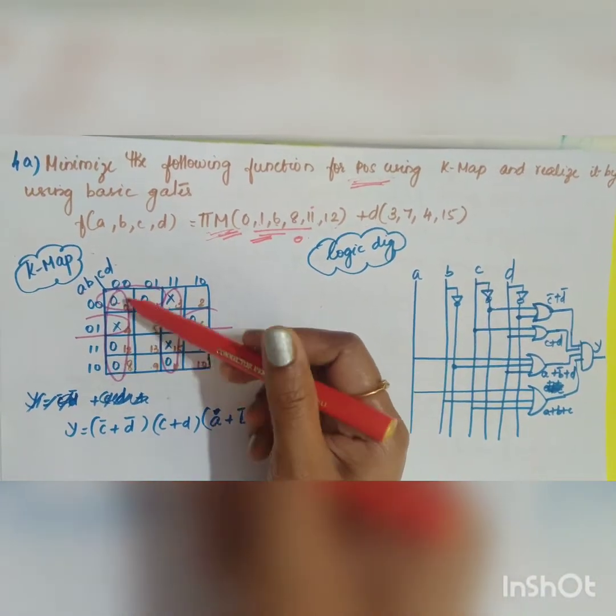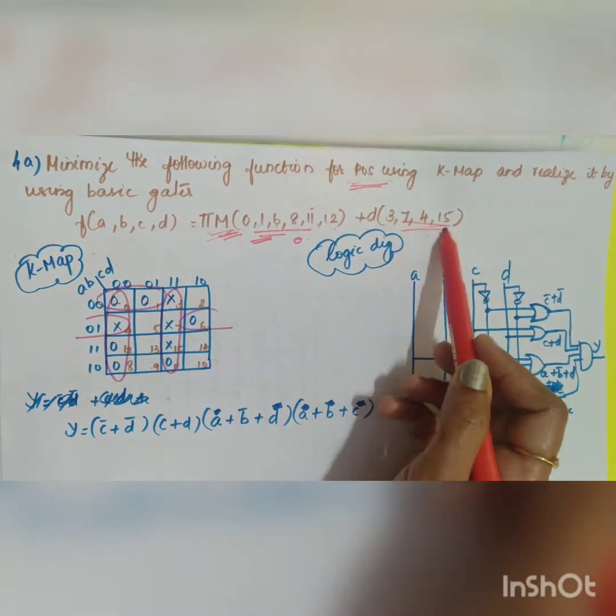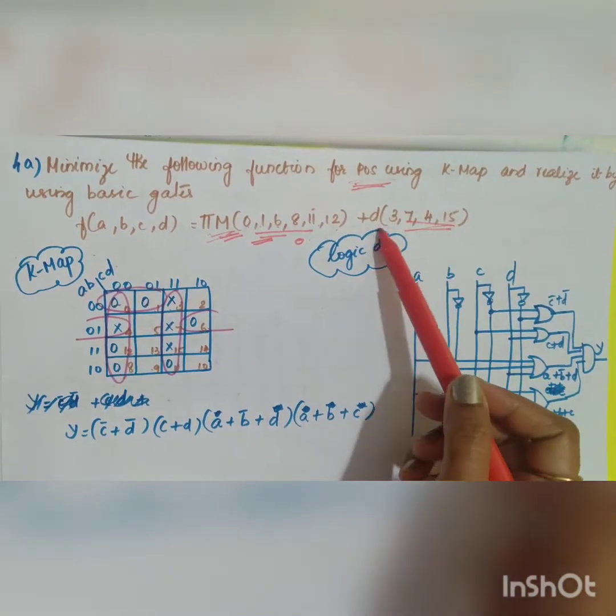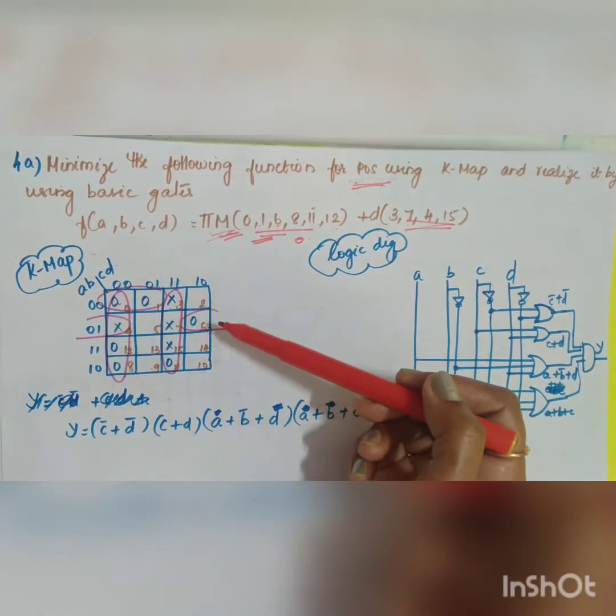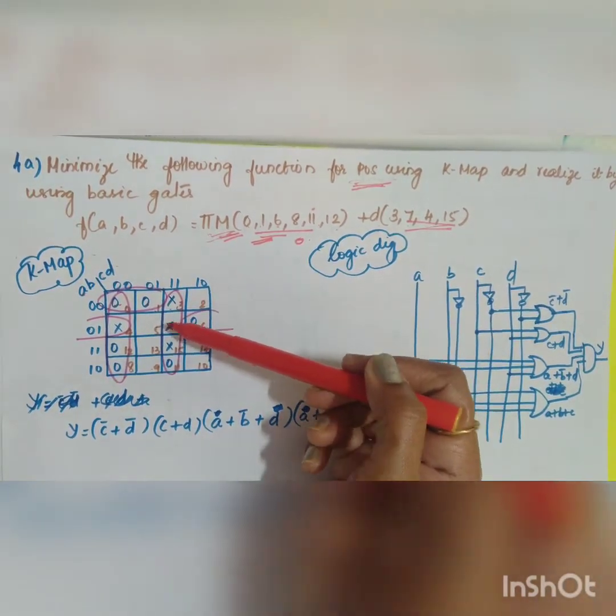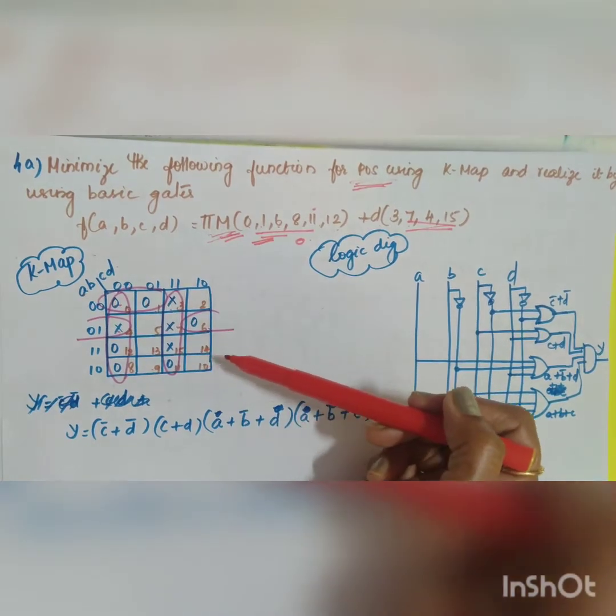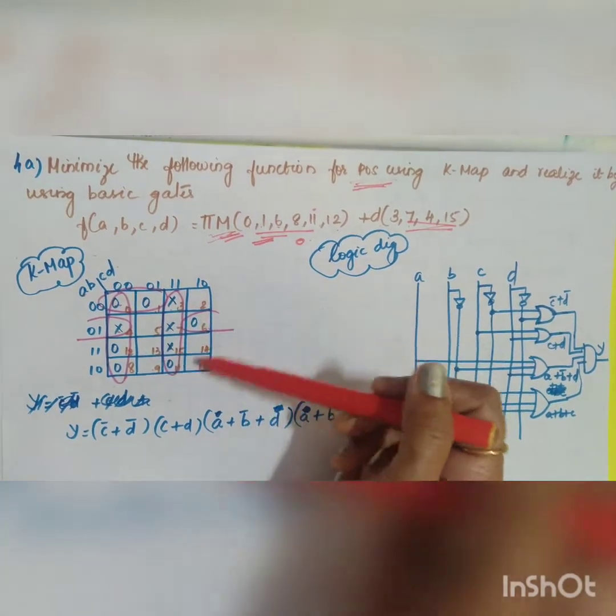Since it is max term you have completed all the 0 then you have to add your don't care. Don't care is equal to 3 7 4 15. 3 7 where is your 6 7 4 15. These are your don't care.